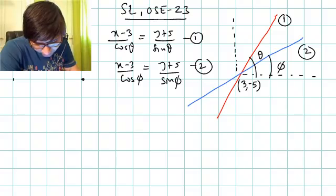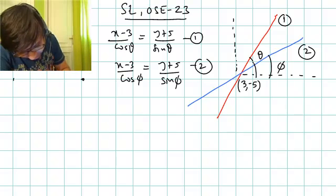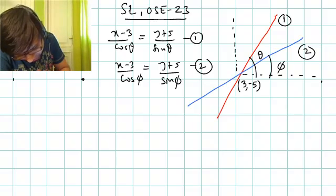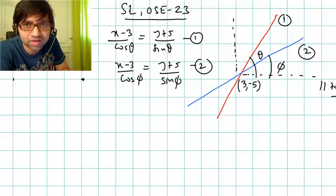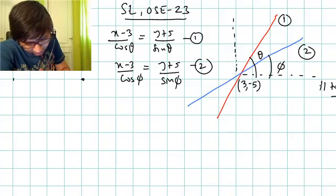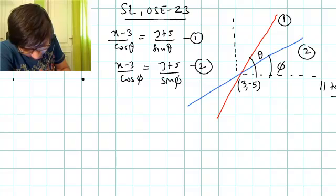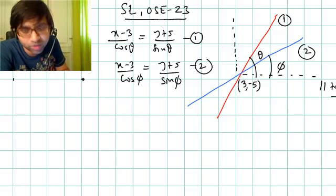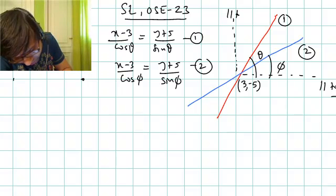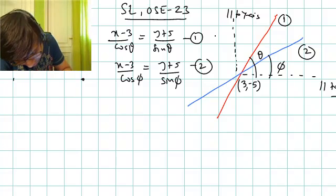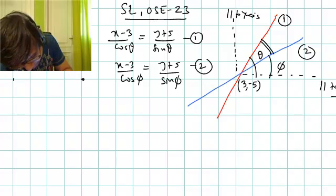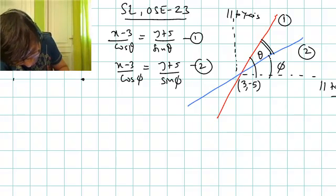I have drawn a line parallel to the x-axis through the point (3, minus 5). Since angle theta is the angle made by the line with the x-axis, we use this horizontal reference line. The angle between the two lines is theta minus phi.